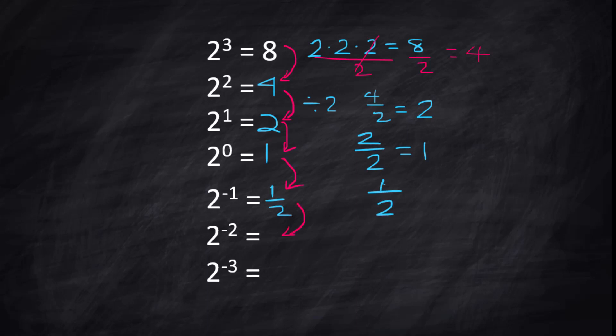Do it again to get 2 to the negative 2. This time we're going to take that 1 half, and we are going to divide that by 2. That would be 1 fourth. Now take 1 fourth and divide it by 2. And well, half of a fourth is an eighth. And you could continue this pattern if you wanted to, but I want to go back and show you this.